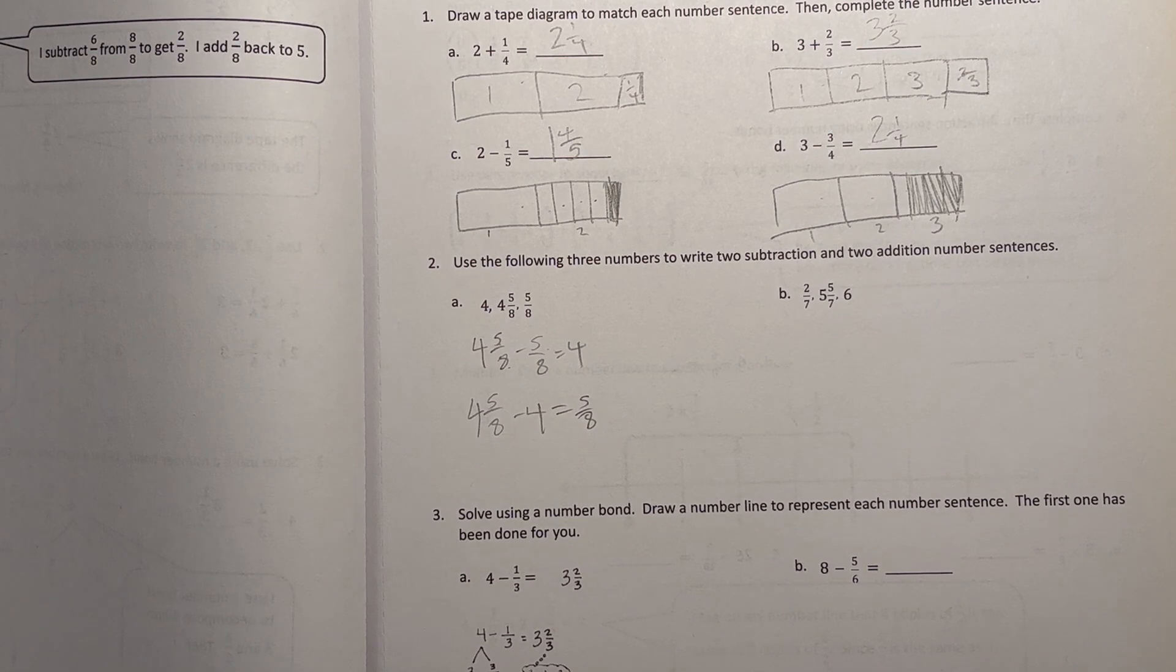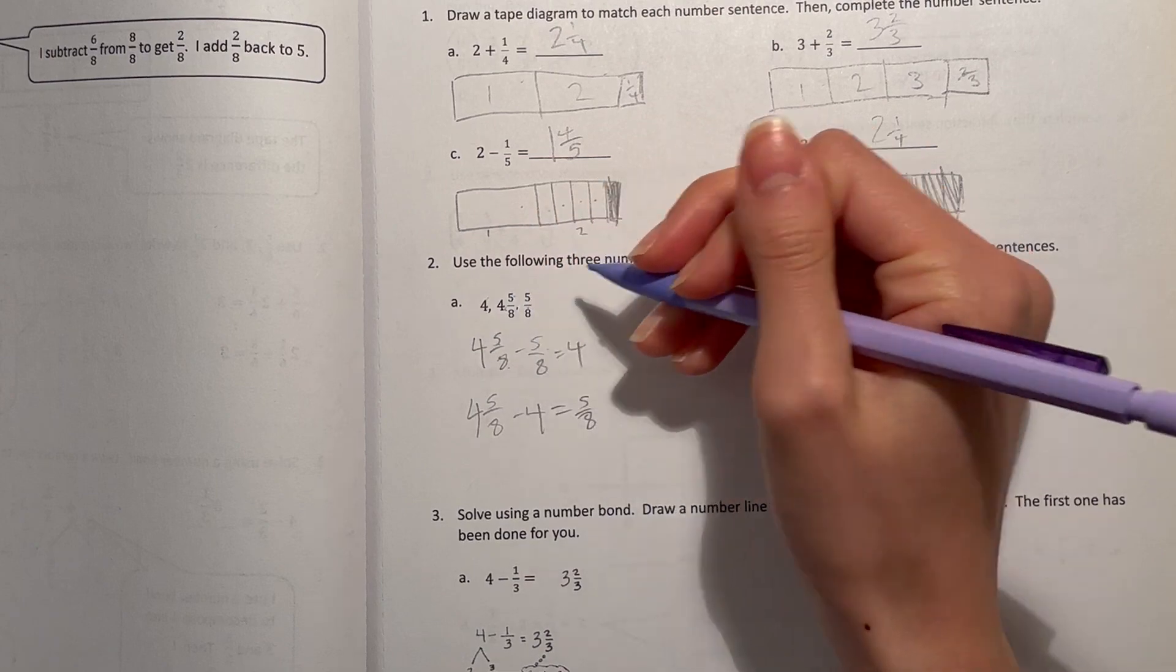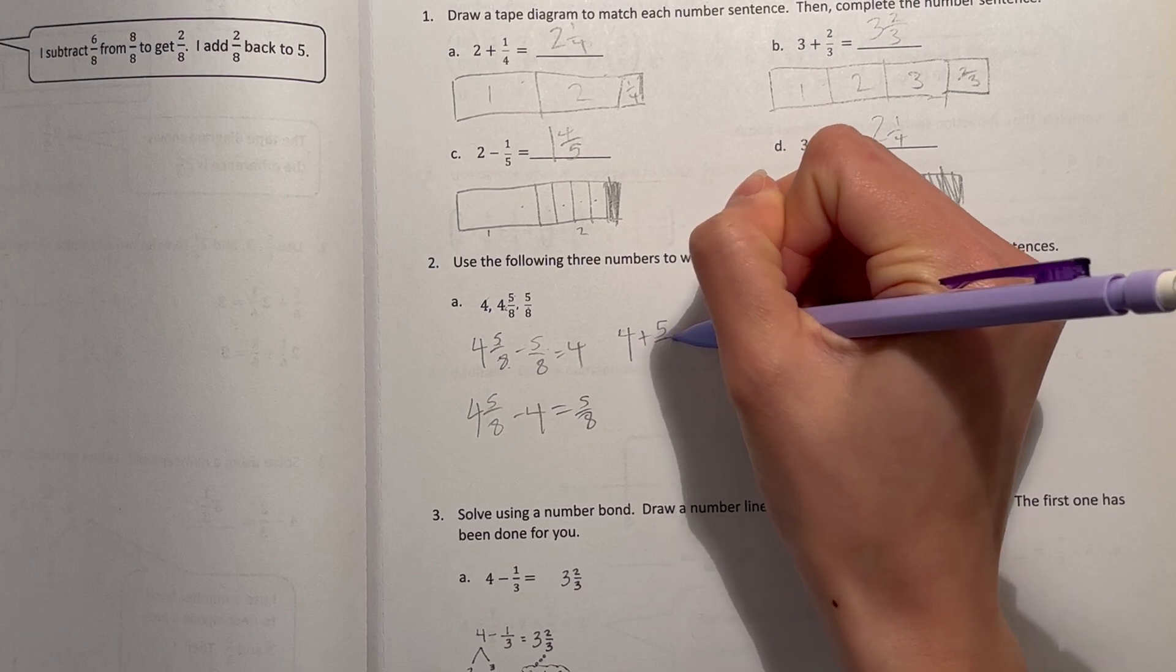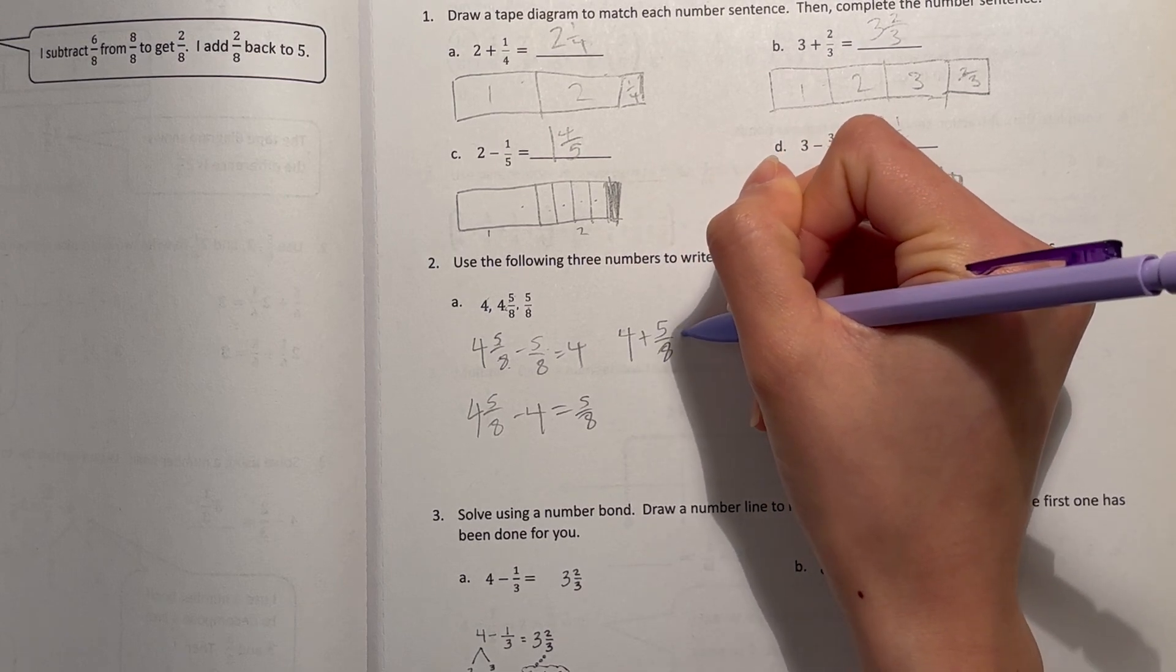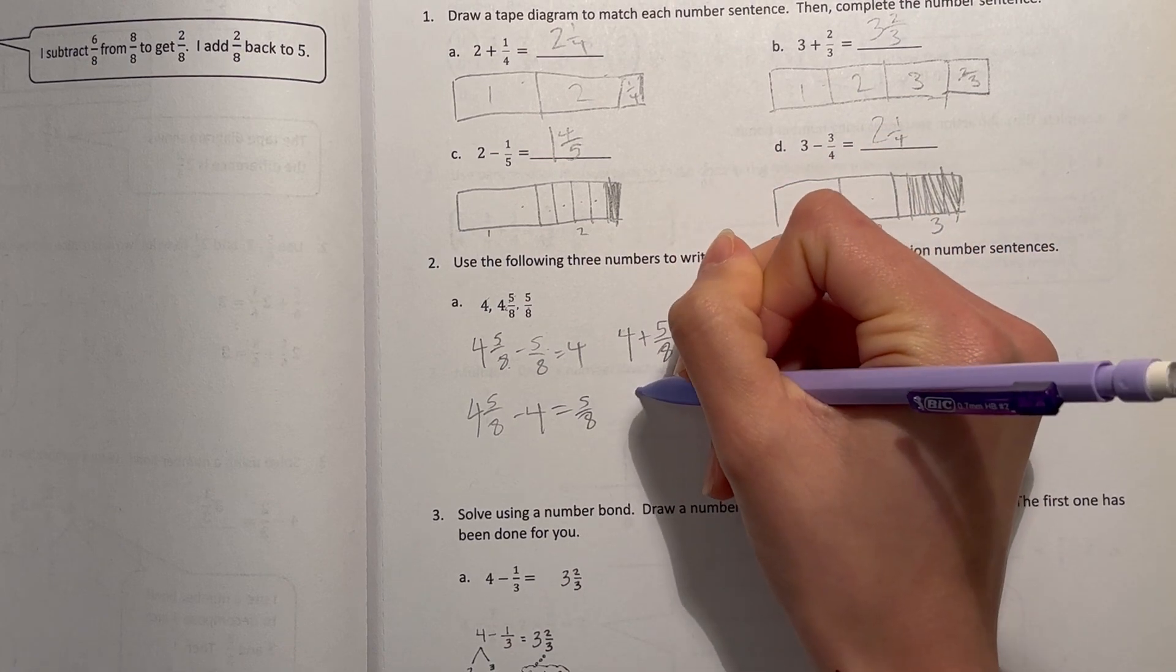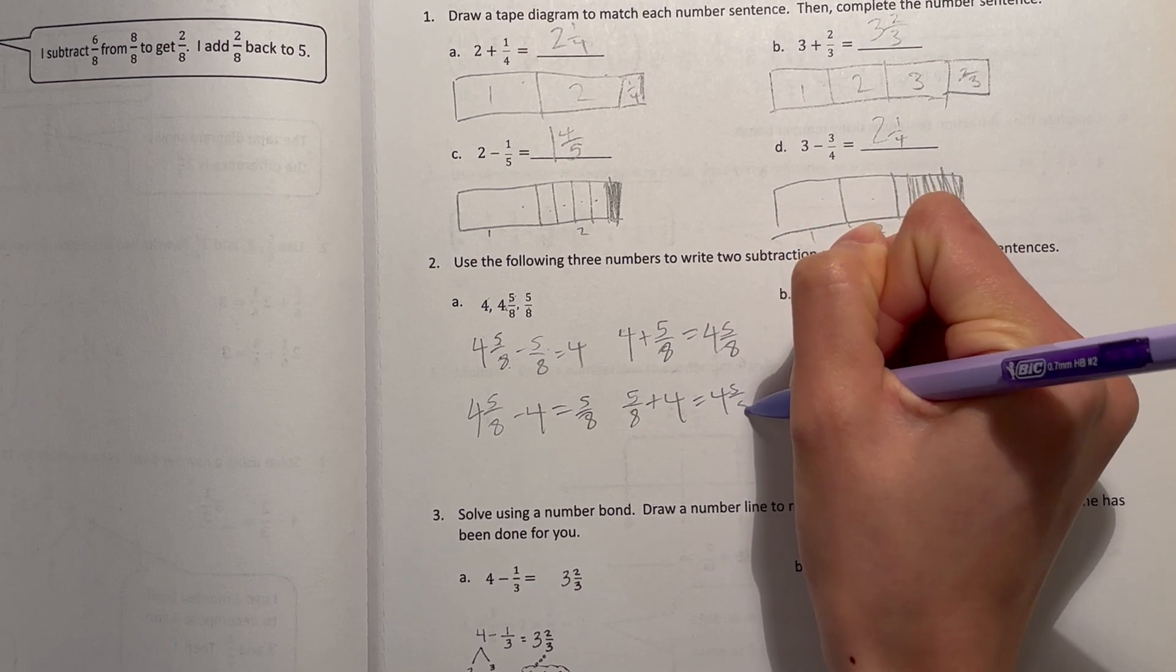All right, and now for the addition, you add up the numbers to get the biggest number in the set, which is 4 and 5 eighths. 4 plus 5 eighths, which is 4 and 5 eighths. I can do it backwards now. 5 eighths plus 4 is 4 and 5 eighths.